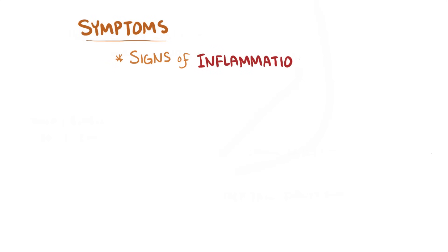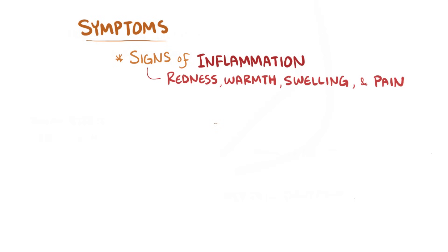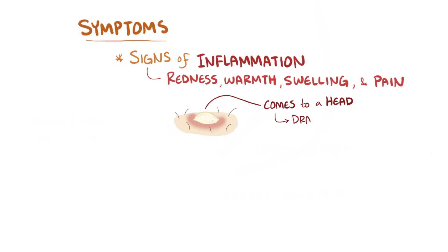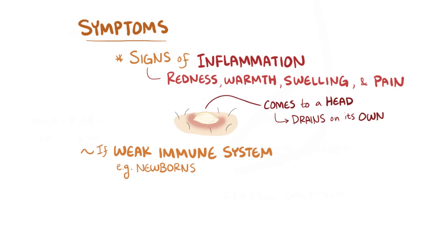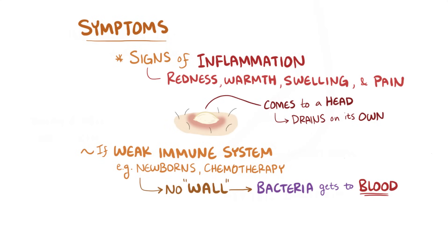As far as symptoms go, abscesses typically cause signs of inflammation: redness, warmth, swelling, and pain. For abscesses on the skin, they often come to a head over time, where the tissue overlying the abscess breaks down, allowing it to drain out by itself. People with weakened immune systems, like newborns and those undergoing chemotherapy treatment for cancer, are at particularly high risk because they're not able to wall off the infection, which allows the bacteria to get out of the tissue and into the bloodstream. In these situations, symptoms can also include fever and vomiting.